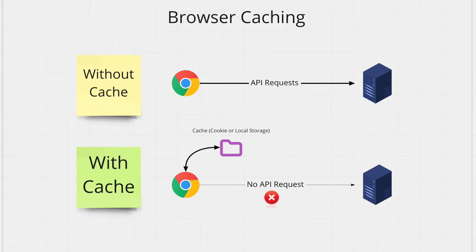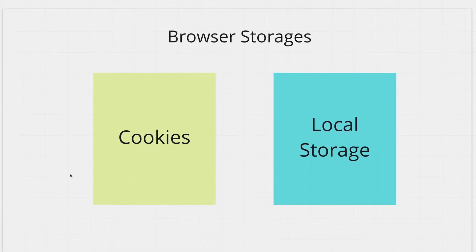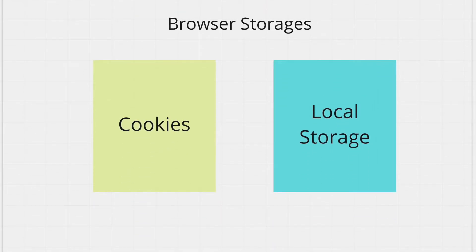Now we've been talking about this browser cache, but what does it really mean? Where in the browser can you stick this data? There are two primary storages in the browser that you can use to cache data: browser cookies and the browser's local storage. Both these storages can be used to store data, and the browser can access anything stored in them very quickly. Cookies are good for more temporary data and local storage is good for more permanent data.